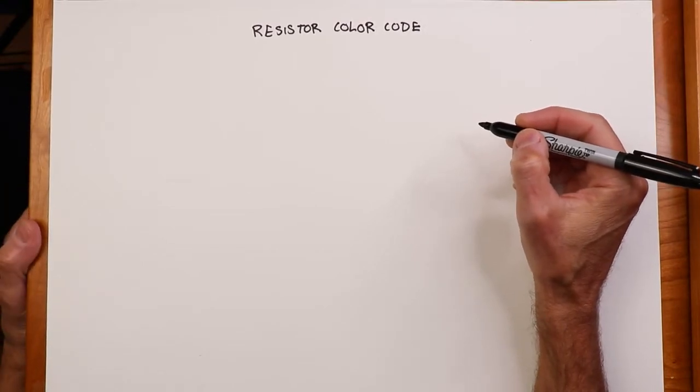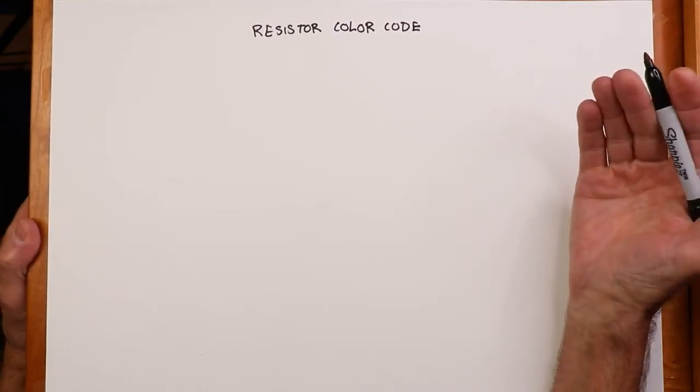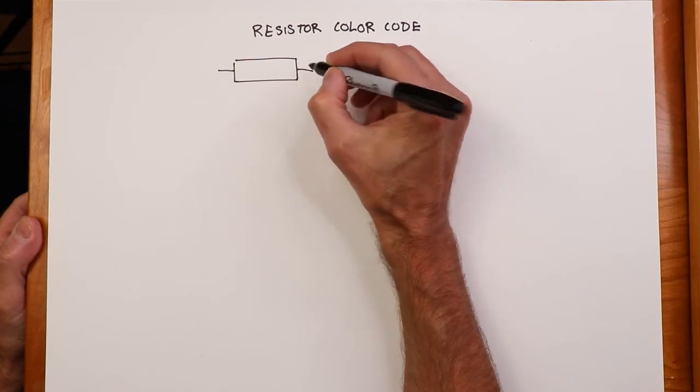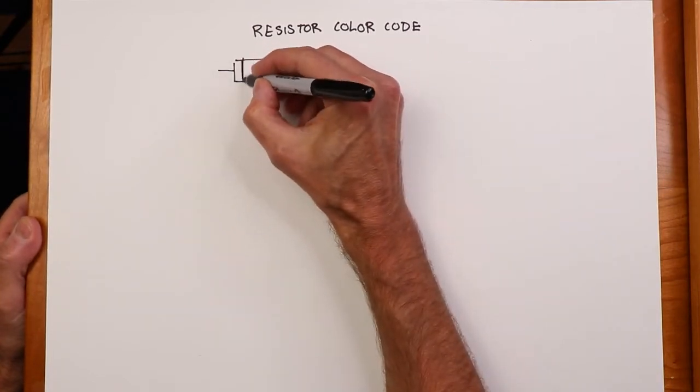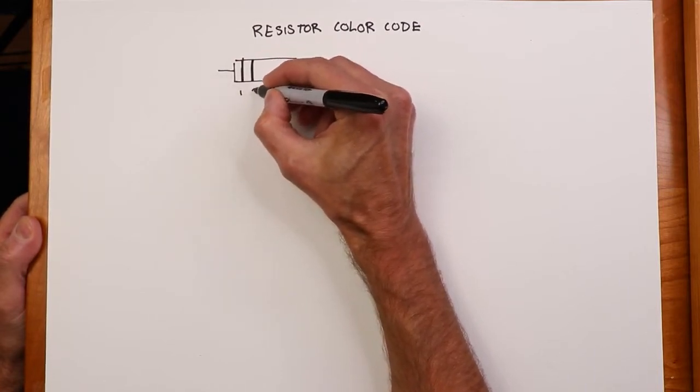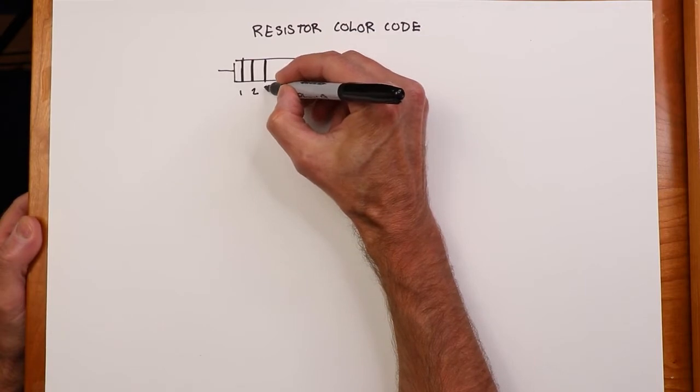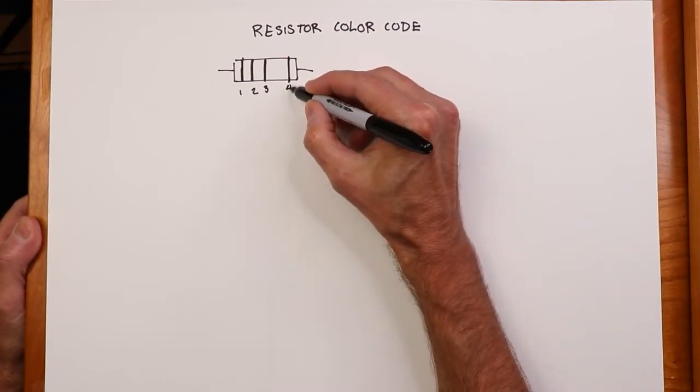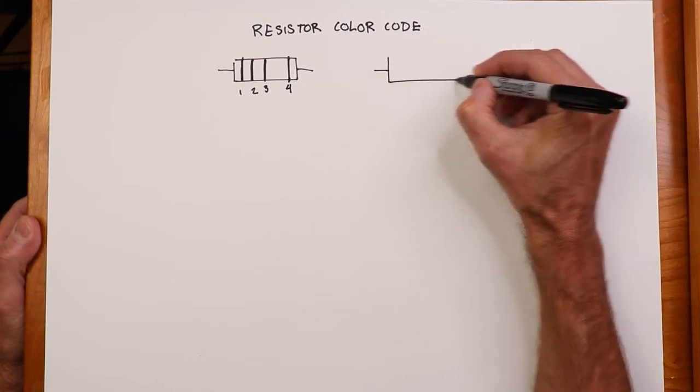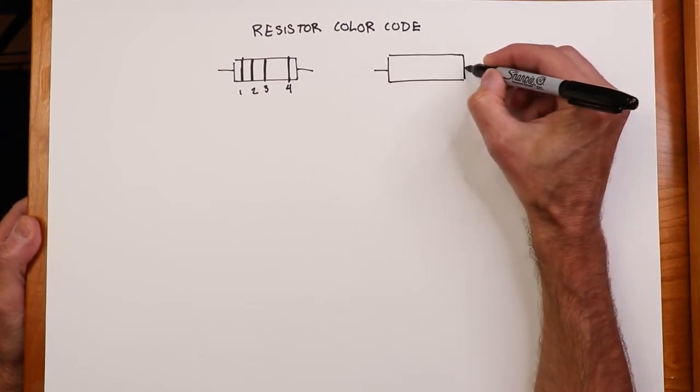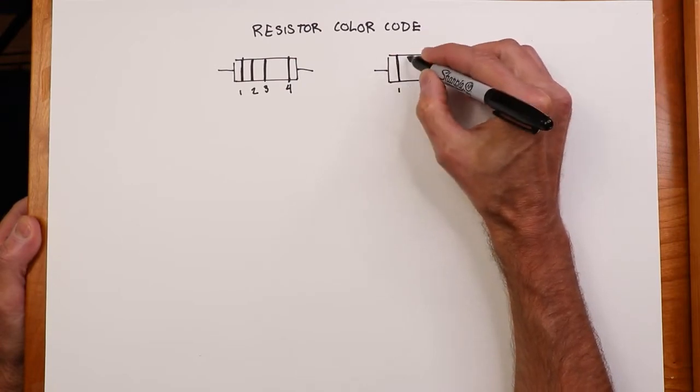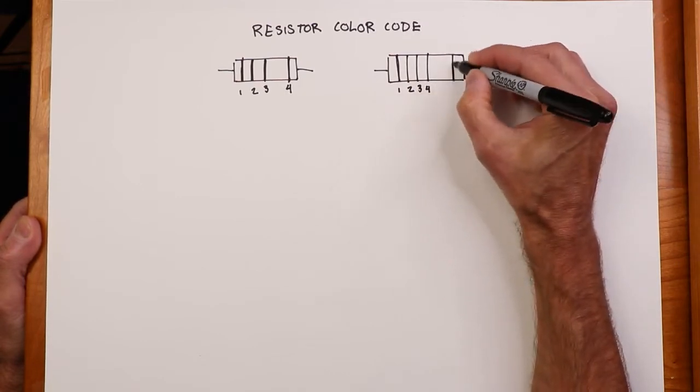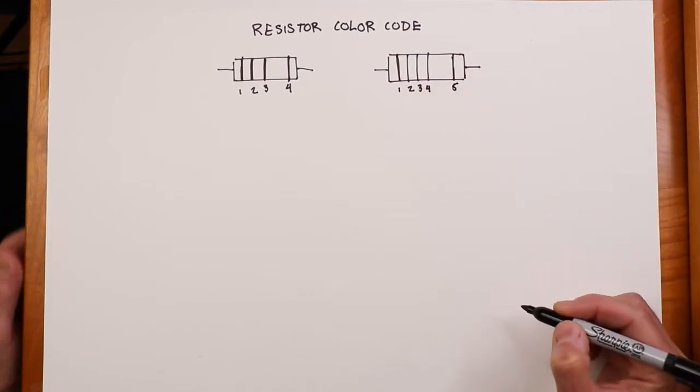All right, the standard color code is either a three or four band color code. If you took a look at a simple resistor, two leads, you would have band number one, band number two, band number three, nice and close, and then possibly another band all by itself over here.